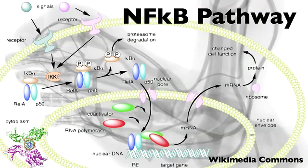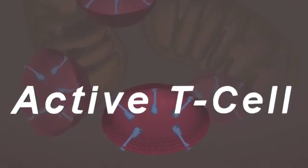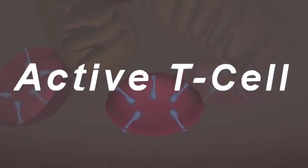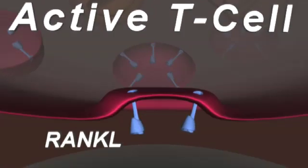Cellular stress or injury may result in expression of RANK ligand on the surface of activated osteoblasts and T-cells. In this example, an activated T-cell is contacting a pre-osteoclast. Because this RANKL presenting cell is in an activated form, RANKL will become expressed.